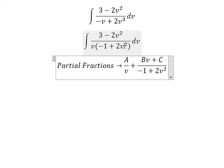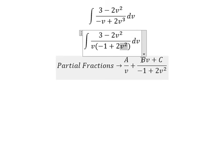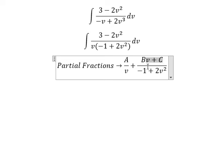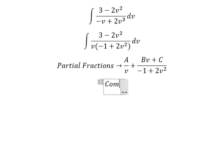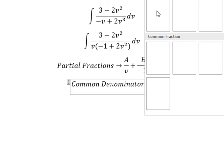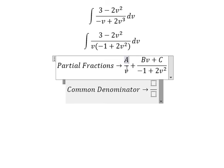Now we can use partial fractions. Because we have the power 2 on V, that means on the numerator we need to reduce the power by negative 1, so 2 minus 1 gives positive V. Next we do common denominator. This one is missing about negative 1 plus 2V squared.